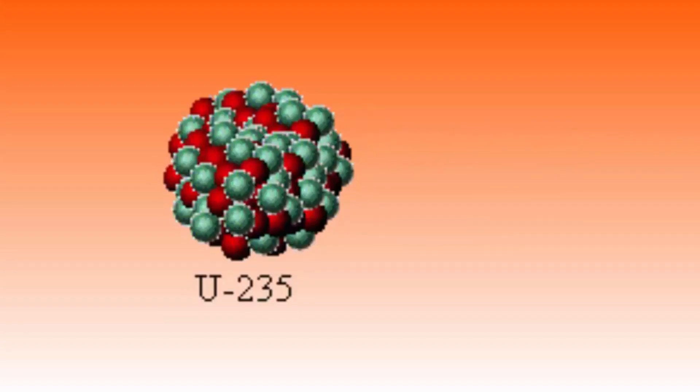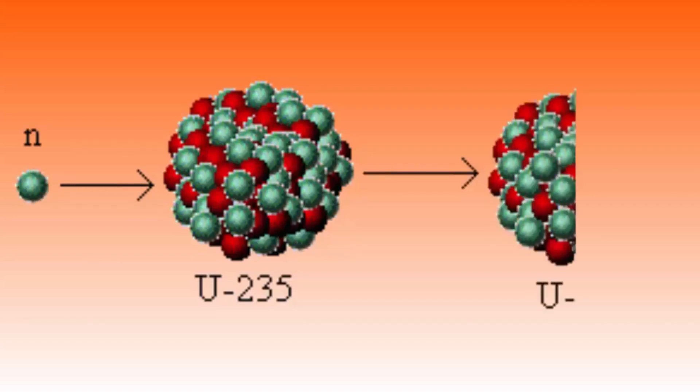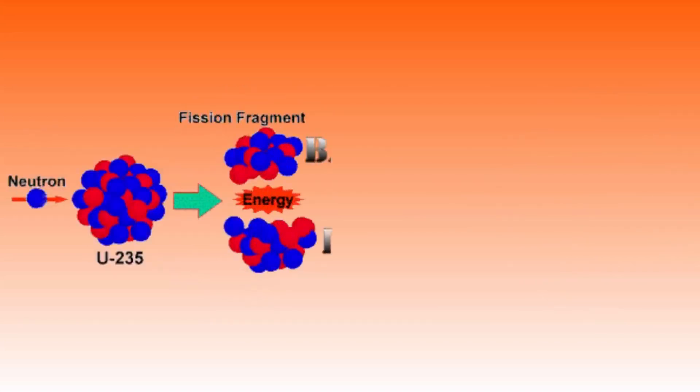Enriched uranium-235 is used in some types of nuclear bombs. It undergoes fission when bombarded by neutrons.